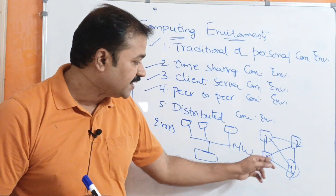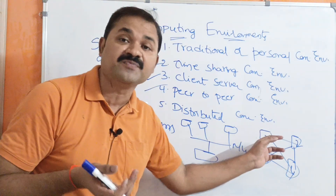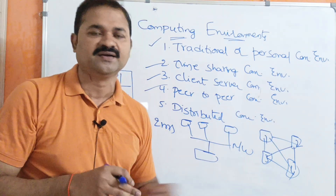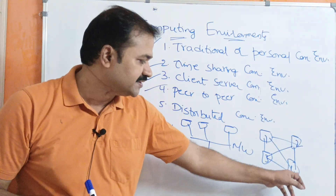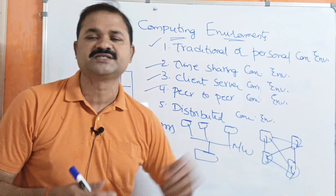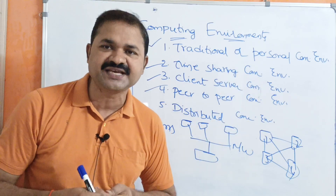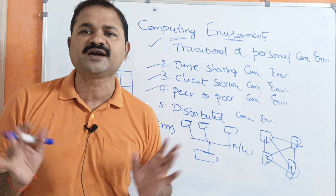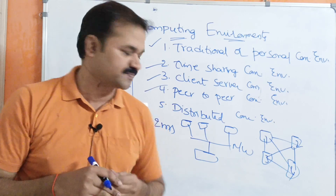Now if computer 4 wants some data from computer 1, then computer 4 becomes the client and computer 1 becomes the server. So each computer acts as both client and server. In peer-to-peer computing, all computers are colleagues — there is no master and no slave.